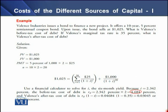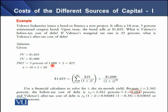On the screen we can see an example of how to determine cost of debt. We have a 10-year, 5% semi-annual coupon bond whose market price is $1,025. The tax rate is 35%. We need to determine the cost of debt before tax and after tax. In the solution, the present value is the current market price of the bond. The face value is $1,000, and the interest payment is 5% of $1,000. With semi-annual compounding, we have $25 for each half-year period.